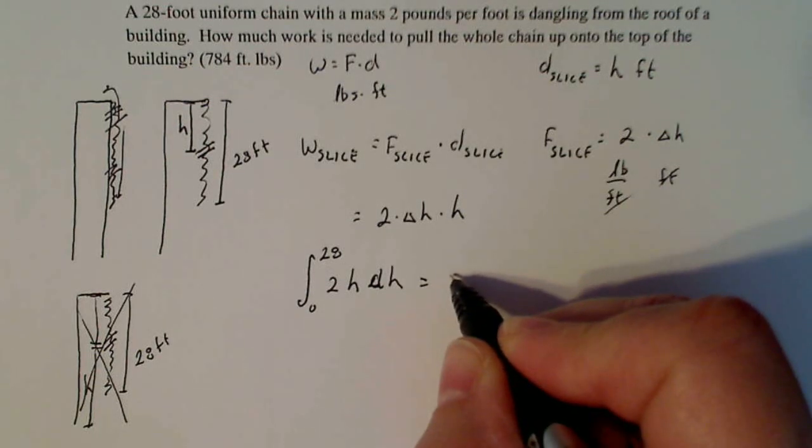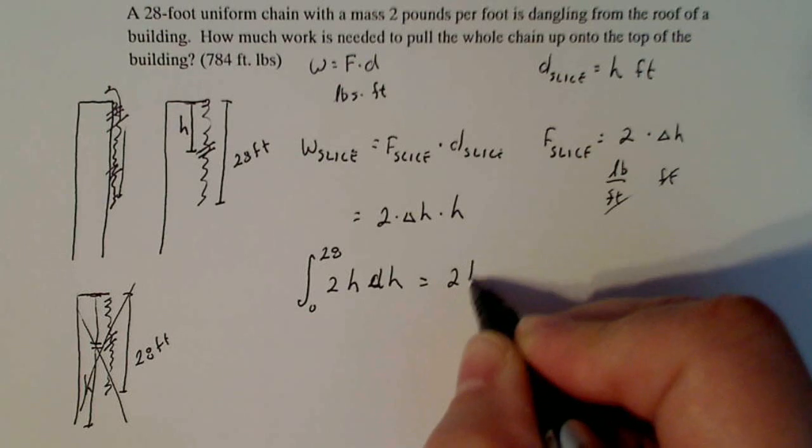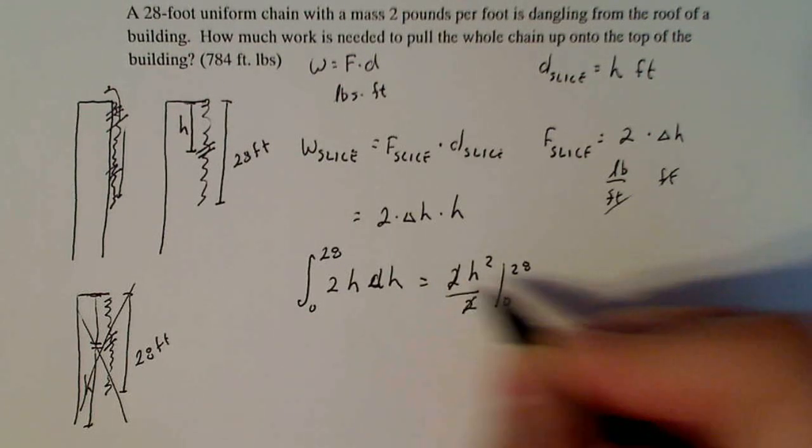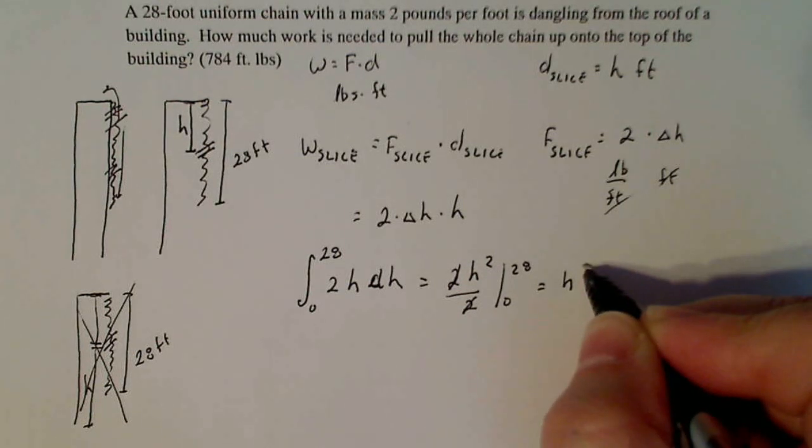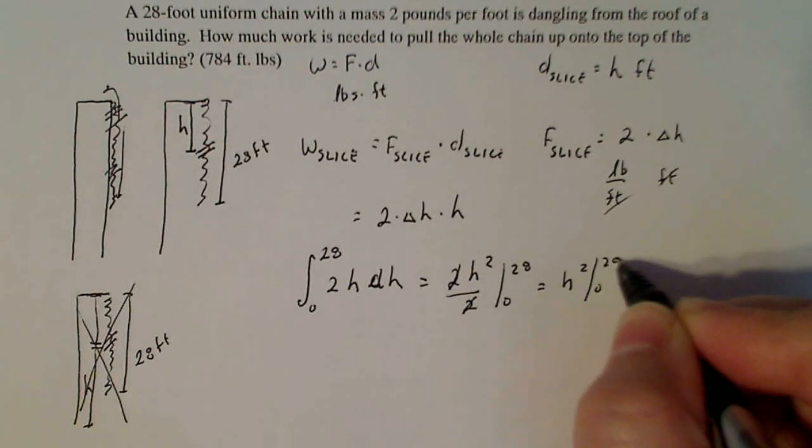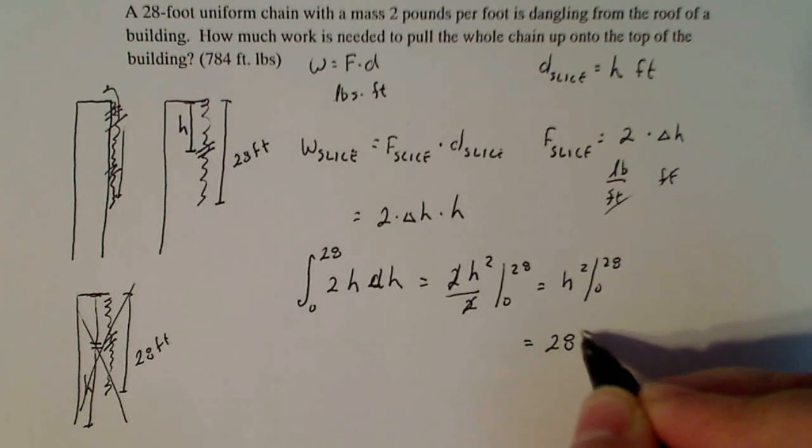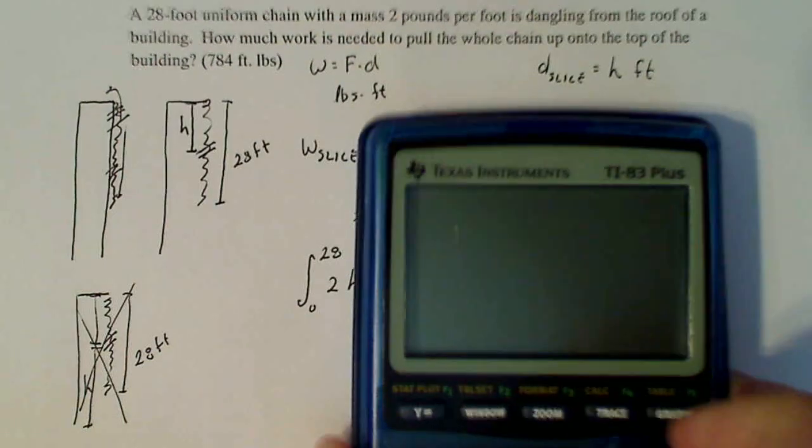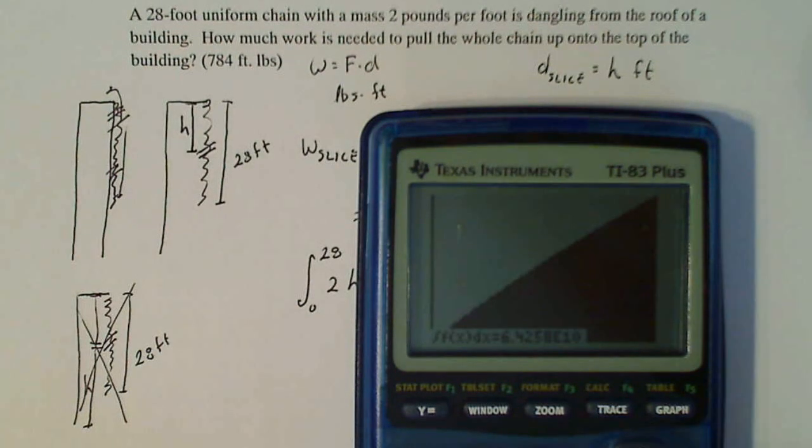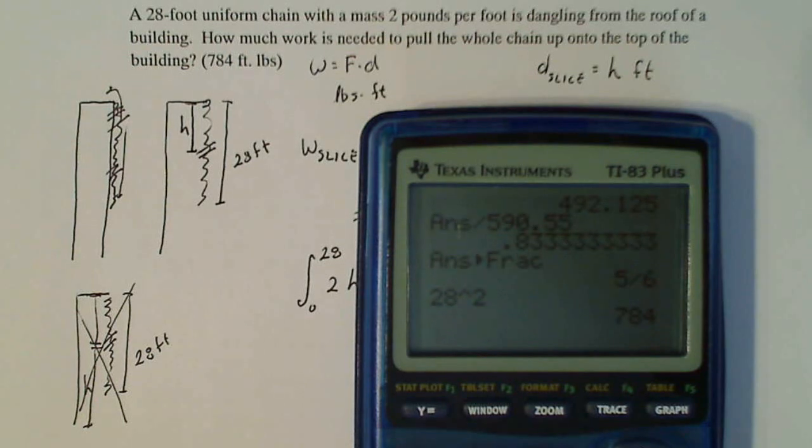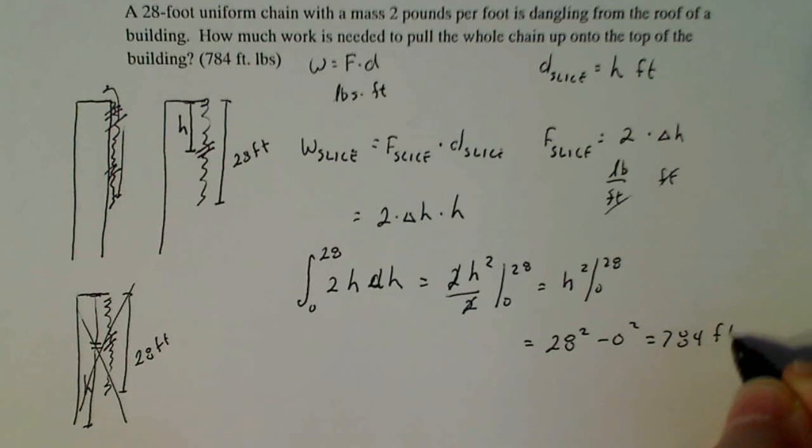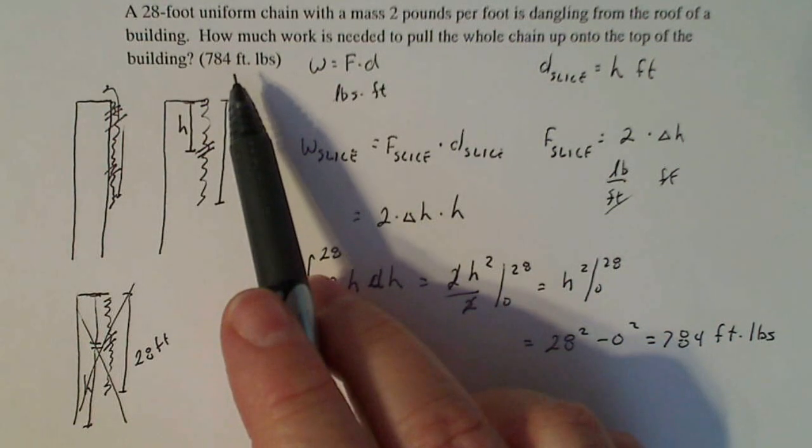And I'll just solve this one really quick. So it's going to be two H squared divided by two from zero to 28. The two's cancel. I'm left with H squared from zero to 28. That's going to give me 28 squared minus zero squared, which in the end, take out my trusty calculator, 28 squared gives me 784 foot pounds, which as you see is the actual number that I had here as the answer.